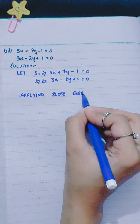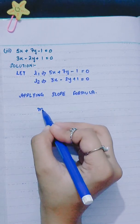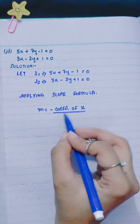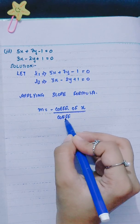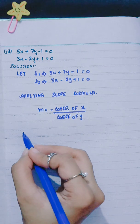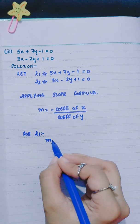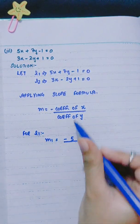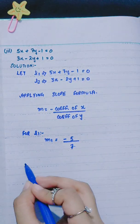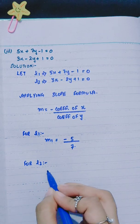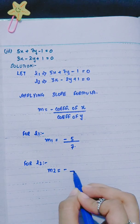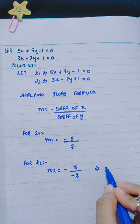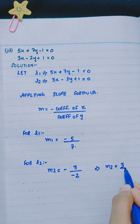Applying the slope formula: m equals minus coefficient of x divided by coefficient of y. For L1, m1 equals minus 5 over 7. For L2, the coefficient of x is 3 and the coefficient of y is minus 2, so m2 equals minus 3 over minus 2, which gives m2 equals 3 over 2.